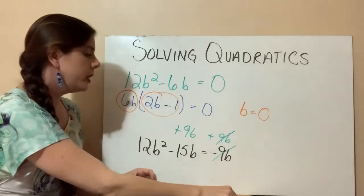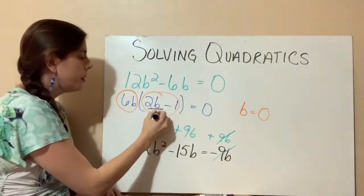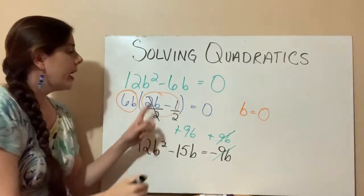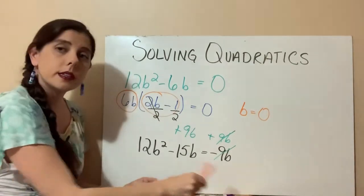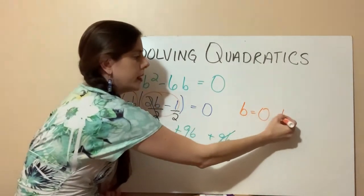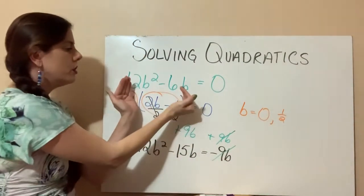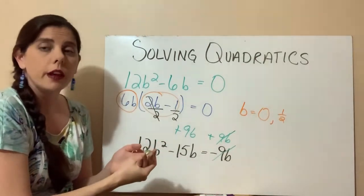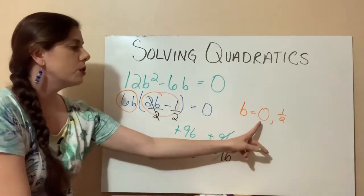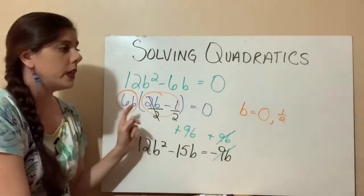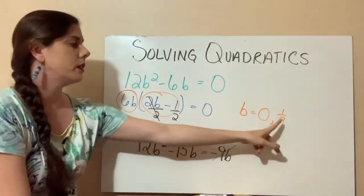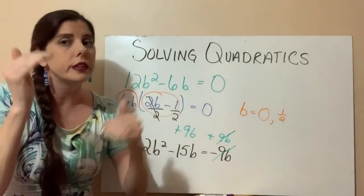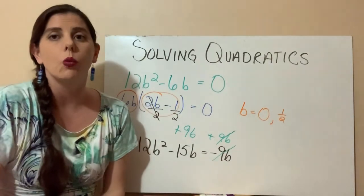So how do we do that? Use our properties of equality. And we have to divide both of those terms by 2 to get the b by itself. So we're going to have b minus 1 half. And what's the opposite of a negative 1 half? It would be just a positive 1 half. So just keep in mind that you might have to do your properties of equality within a set of parentheses to get the variable by itself so that you can actually solve that equation and get all of the different solutions. So for this one, the solutions would be 0 because 6 times 0 would equal 0. And then inside parentheses, the b would have to equal a positive 1 half. So this is just giving you an example, a few different examples of how to go through all the different factoring steps, but continuing on to solve the equation when it's set to 0.